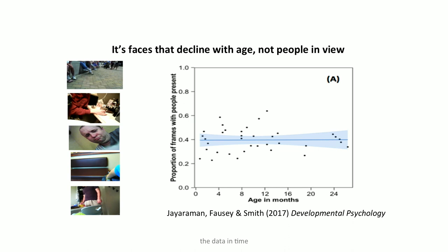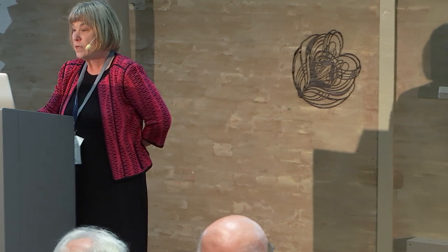The interesting thing is it's faces that decline with age, not people in view. If you count any body part in these head camera images — a face, a knee, an elbow, a foot — throughout the first two years of life there are just about always people in view. Nobody in their right mind would leave an 18-month-old alone. People are always nearby. It's faces that are special: faces are in view early and not so much in view later.